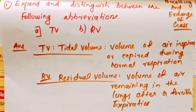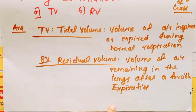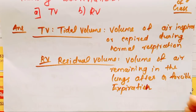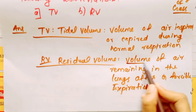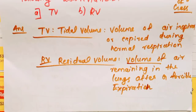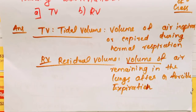RV is Residual Volume: the volume of air remaining in the lungs after forcible expiration. After expiration, we still have air remaining in the lungs — that is the residual volume.